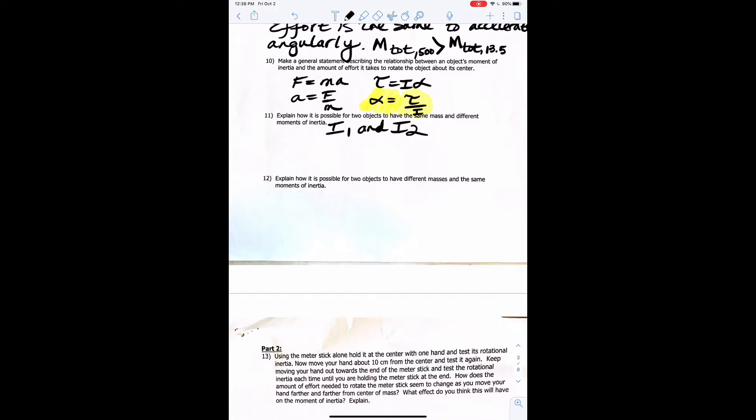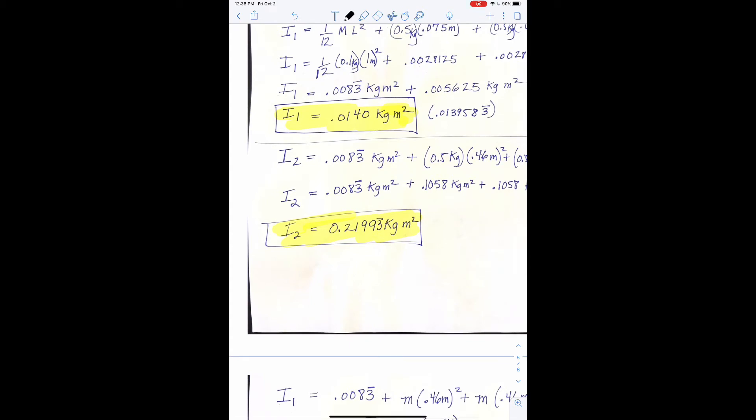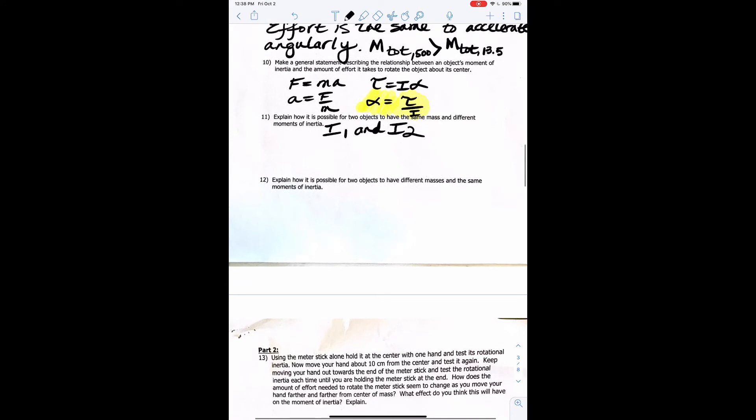Number 11, explain how it is possible for two objects to have the same mass and different moment of inertias. This is what we saw with I2 and I1. So I'll just write that down, but you've got to answer the question. But that's what we saw earlier. When we put the 500s close in and we put the 500s further out, they had the same mass. It was two 500 masses with the ruler and the meter stick, and we saw that I1 was much smaller than I2.